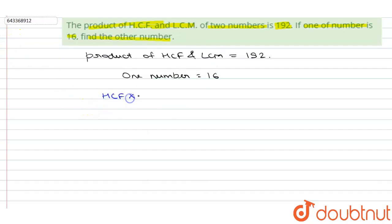HCF into LCM is equal to product of the numbers, means the product of both the numbers will always be equal to the product of HCF and LCM. So we have one number as 16.